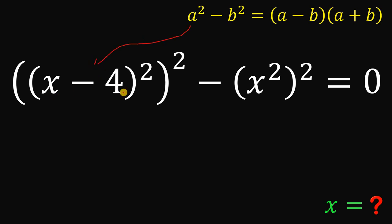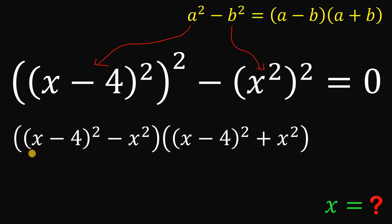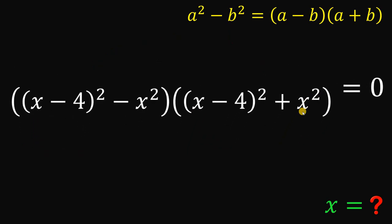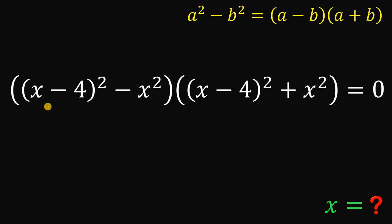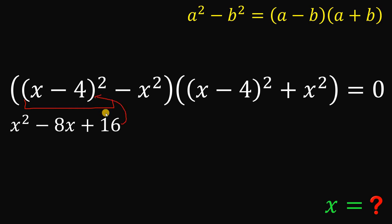Here, a represents x minus 4 raised to the power of 2, and b represents x squared. So this can be factored as: x minus 4 raised to the power of 2 minus x squared, multiplied by x minus 4 raised to the power of 2 plus x squared. We can replace this factored form into our original equation and then simplify.